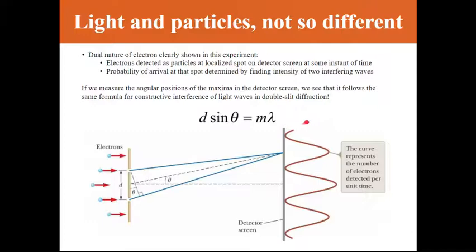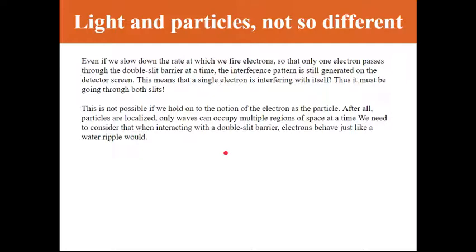So remember that light creates fringes because throughout the detector screen, the path length between two slits changes, so that creates constructive and destructive interference. So it seemed that for the pattern created with electrons, it followed the same rules for constructive and destructive interference as light in double-slit diffraction. What that meant was that you could then use the same formulas and get a wavelength. And if you could get a wavelength, then that means that you were effectively finding the wavelength of electrons.